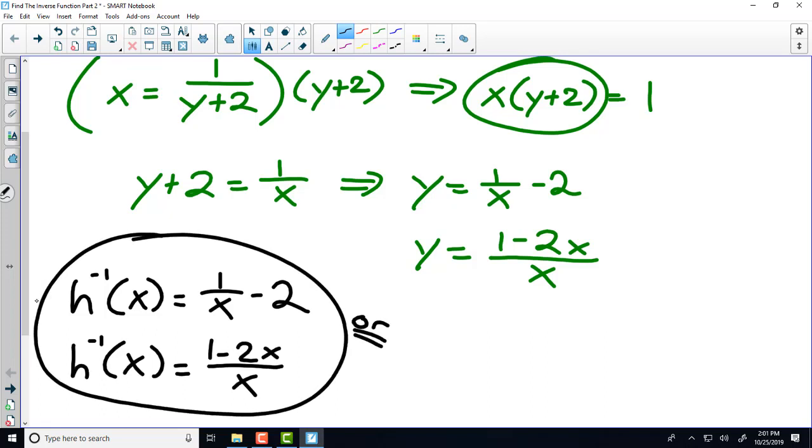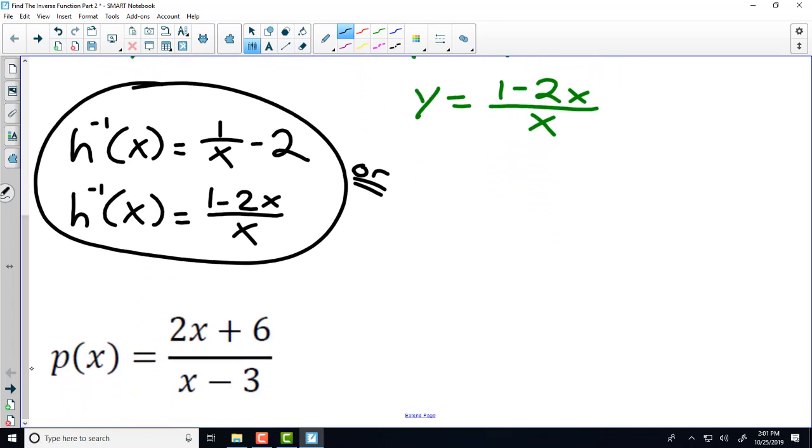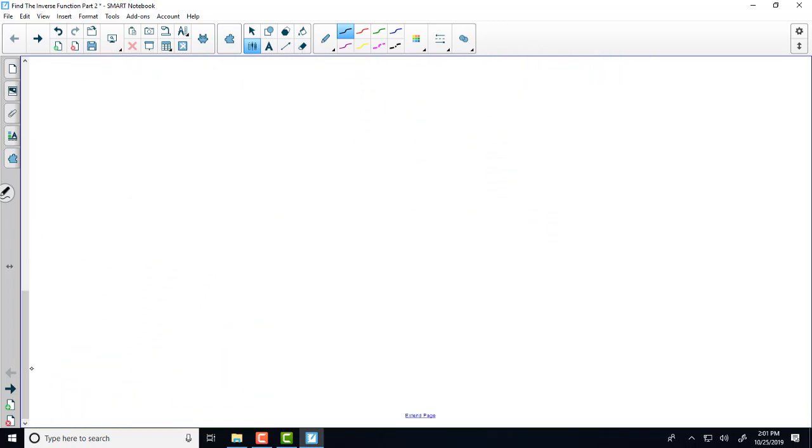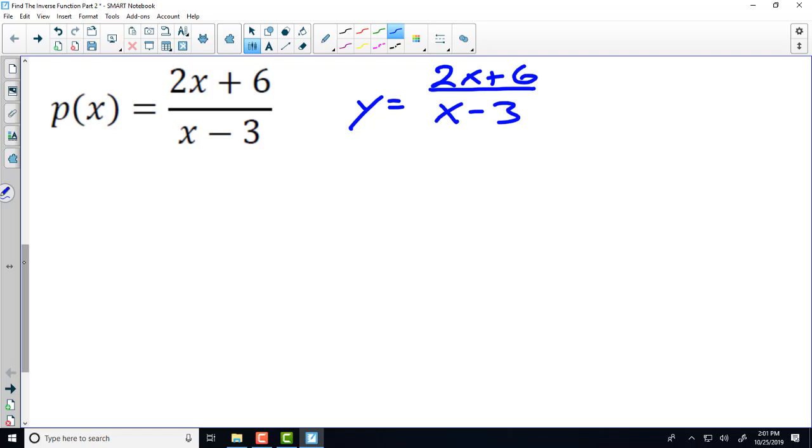Okay, let's do the second one. Well, here it is, and this is one of those trickier ones. Let me just give myself some more room here. Because we've got two x's in it. Let's get started. Change p of x to y. Swap y with both x's, so it's going to look like this. x equals 2y plus 6 over y minus 3.